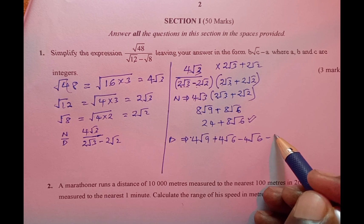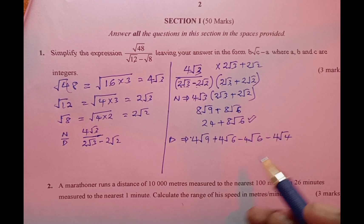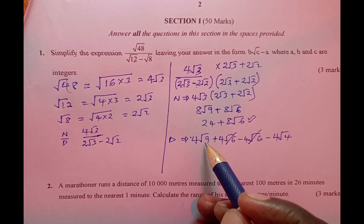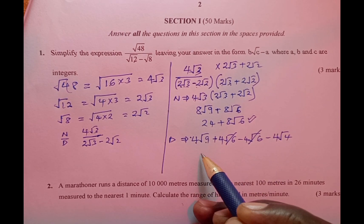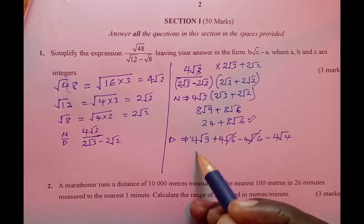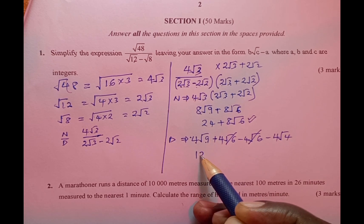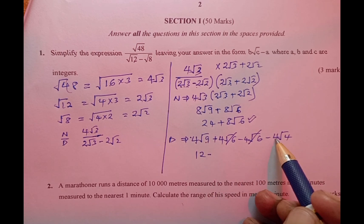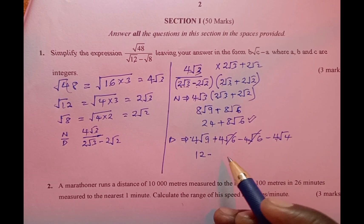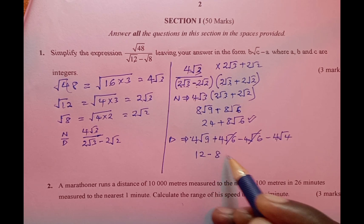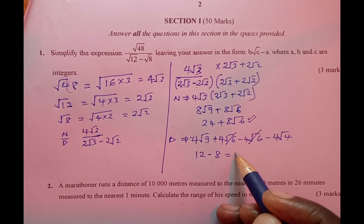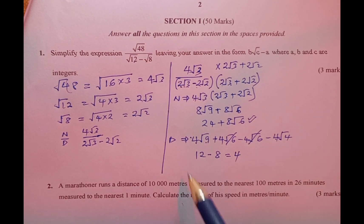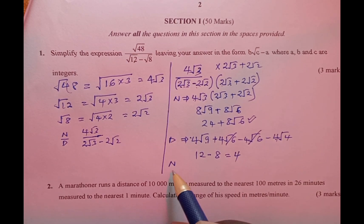Remember this and this will cancel. 4√9 will give us 12, then minus 4√4 will give us 8. This one is going to be equivalent to 4.